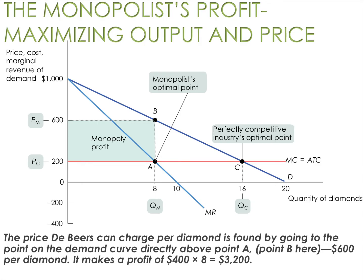To further oversimplify it, we've made the marginal cost equal to the average total cost. So if you're looking for total profit, you look for total revenue — quantity times price — which is eight times $600, minus total cost, found as average total cost times quantity, which is $200 times eight. So the difference is $400 times eight, or $3,200. That is your total profit.